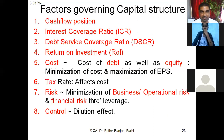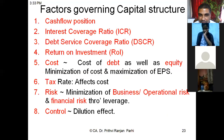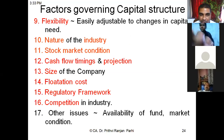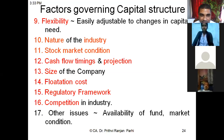These are certain factors that govern the capital structure, as we discussed in our last class: cash proposition, ICR, DSCR, return on investment, cost, tax rate, risk — which includes business risk as well as operational risk — control effect or the possibility of dilution of control, flexibility of capital structure, nature of industry, stock market condition, cash flow timing and future projections, size of the company, floatation cost, regulatory framework, legal framework, competition in the industry, and other miscellaneous issues like availability of fund and market conditions.